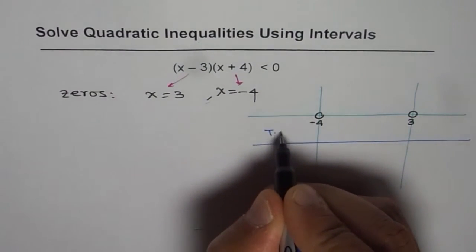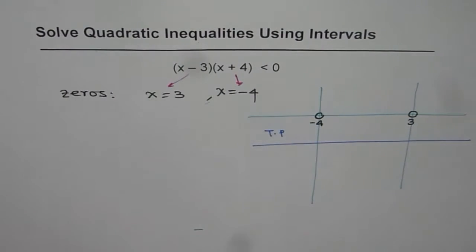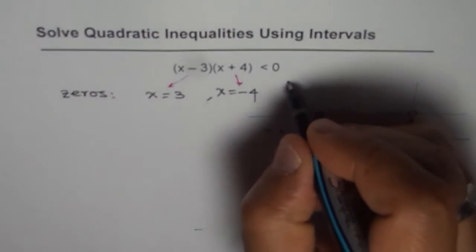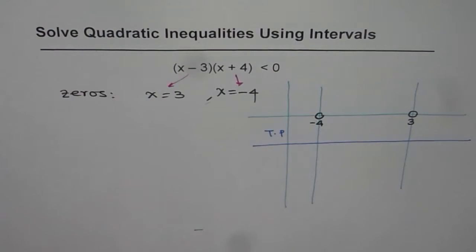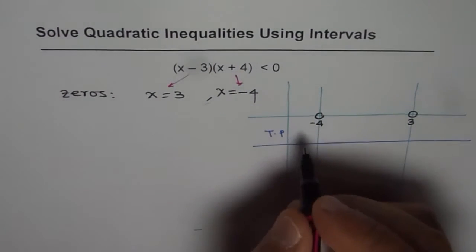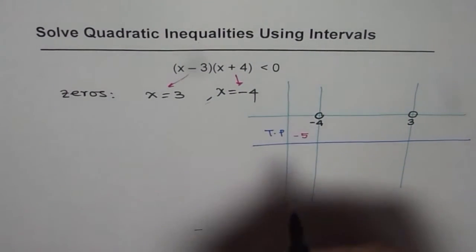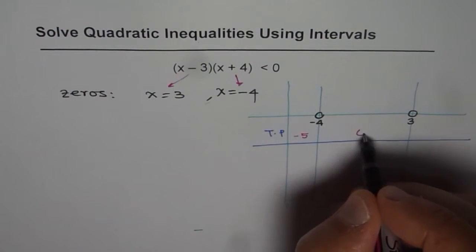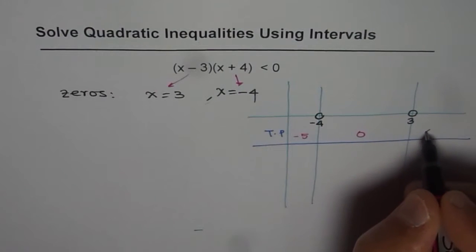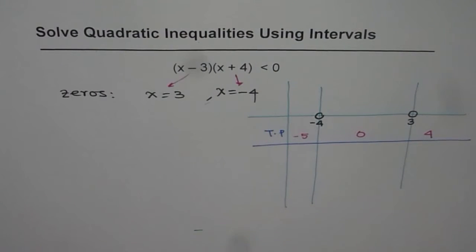So I will call this column as test points. Now a test point in the interval from minus infinity to minus 4 could be minus 5. So let us write minus 5 here. A good test point between minus 4 and 3 is 0, and beyond 3 we can take 4 as our test point.